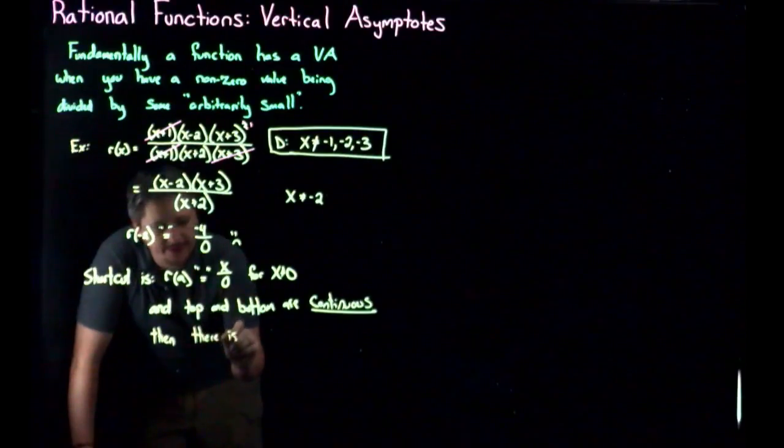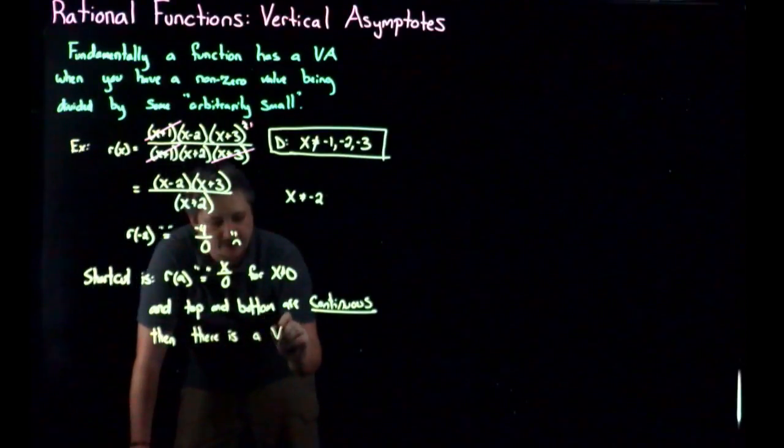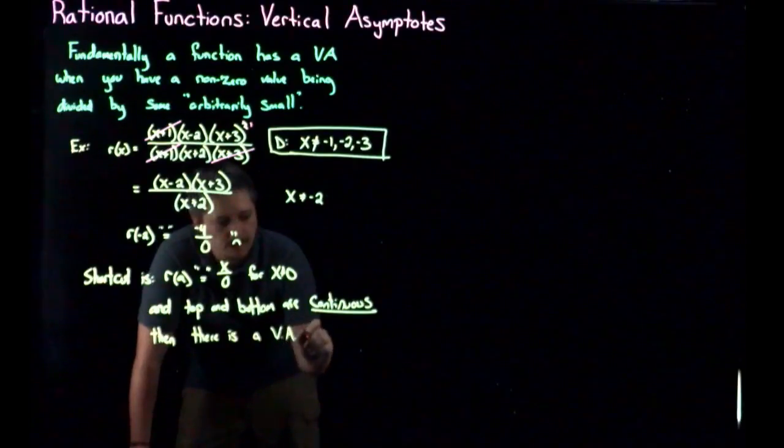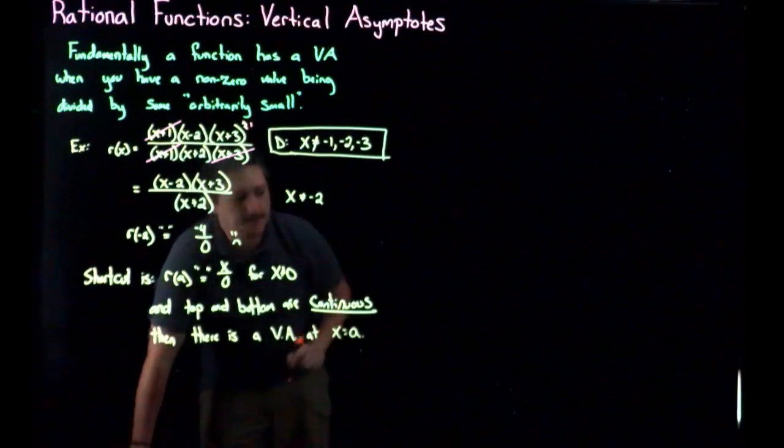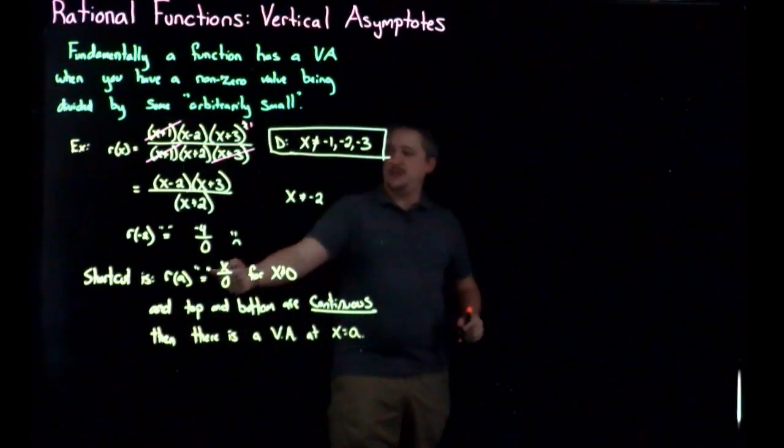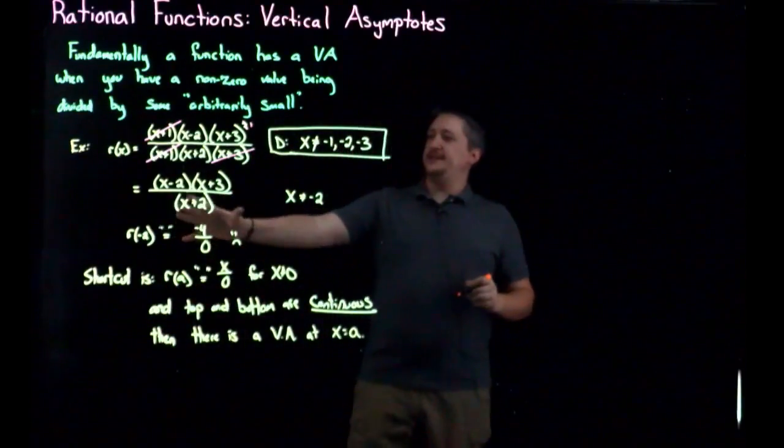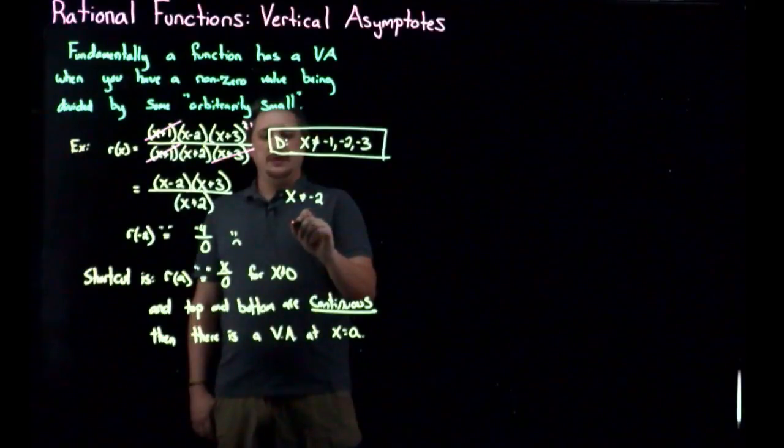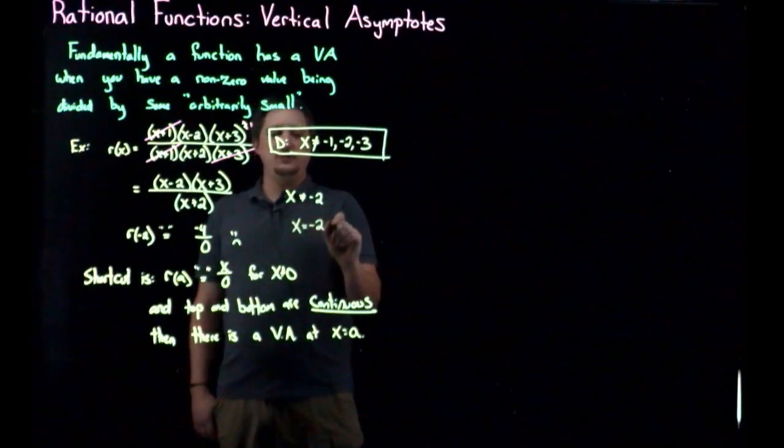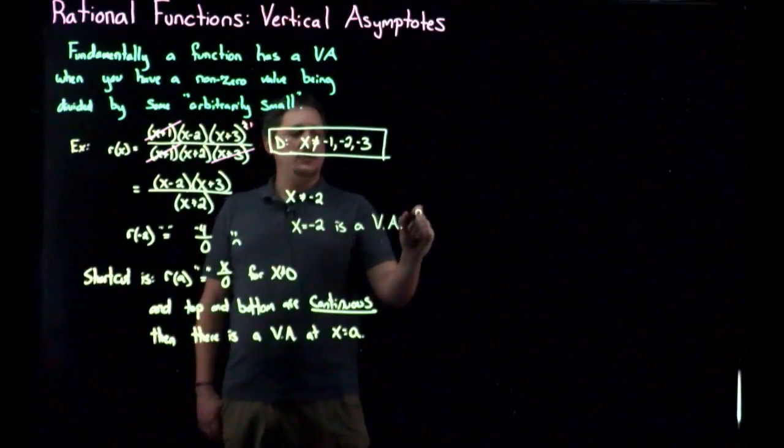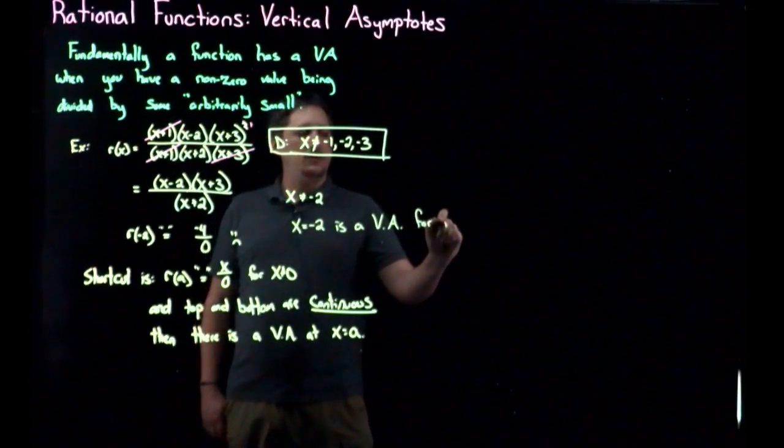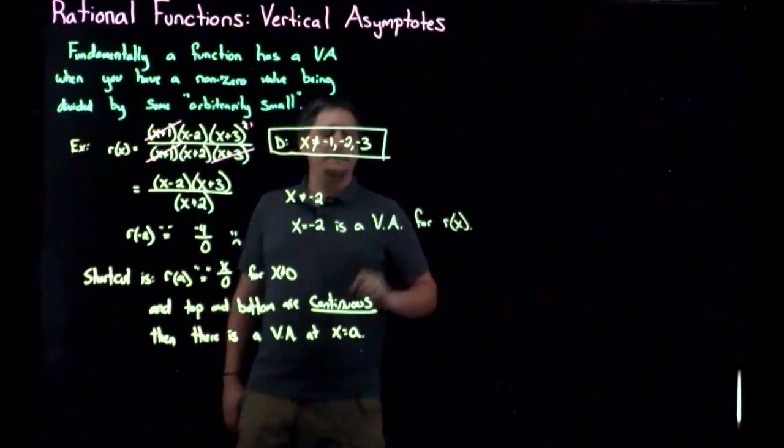Then there is a vertical asymptote at x equals a, meaning the thing you plugged in. So what that's saying is here, x equals negative 2 is a vertical asymptote for r of x.